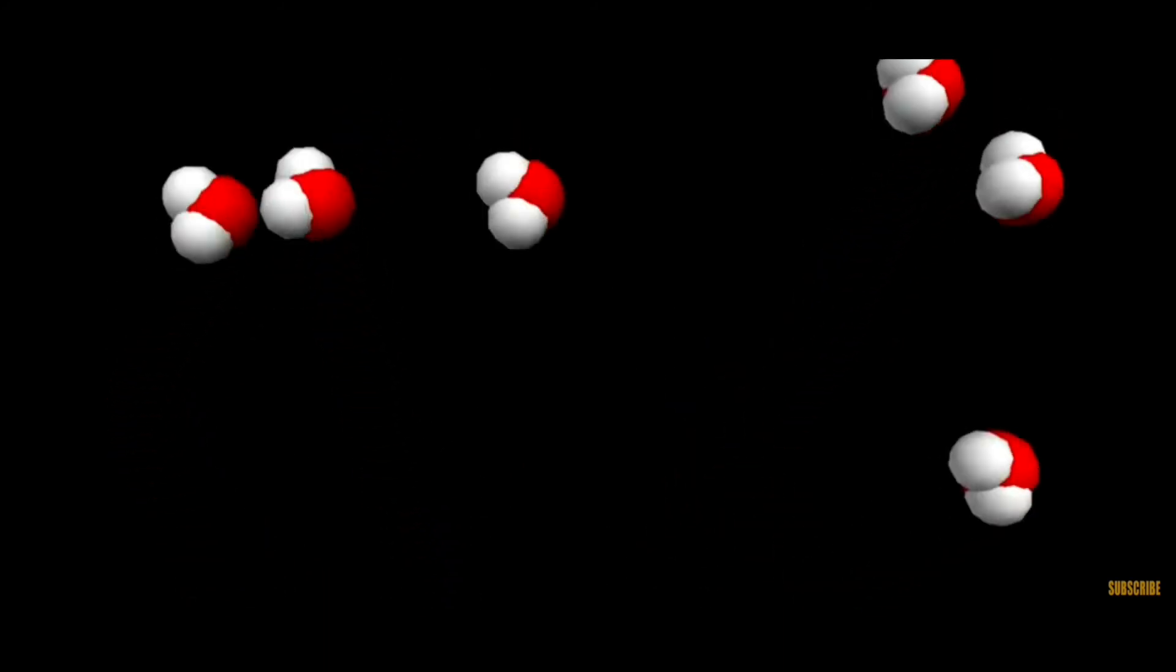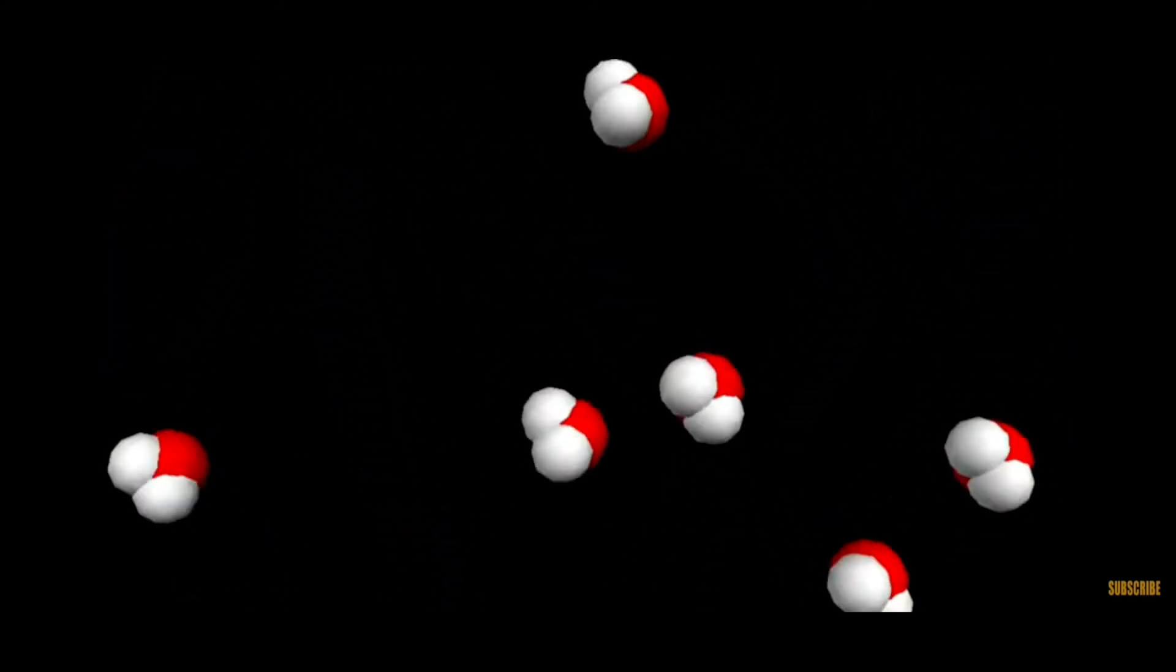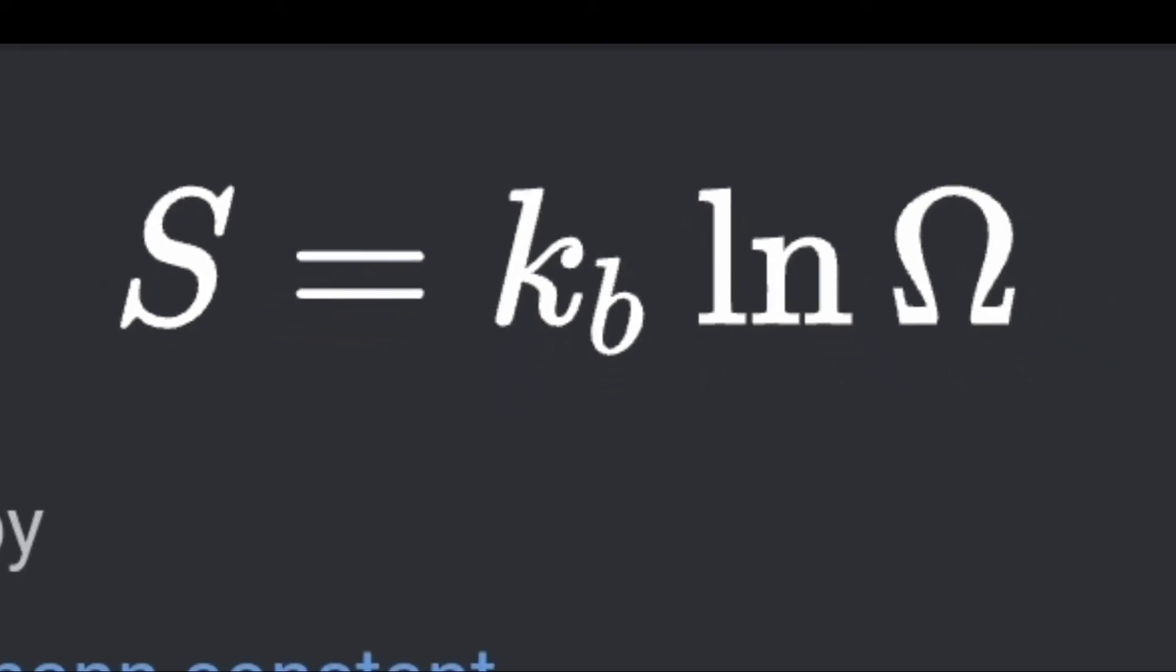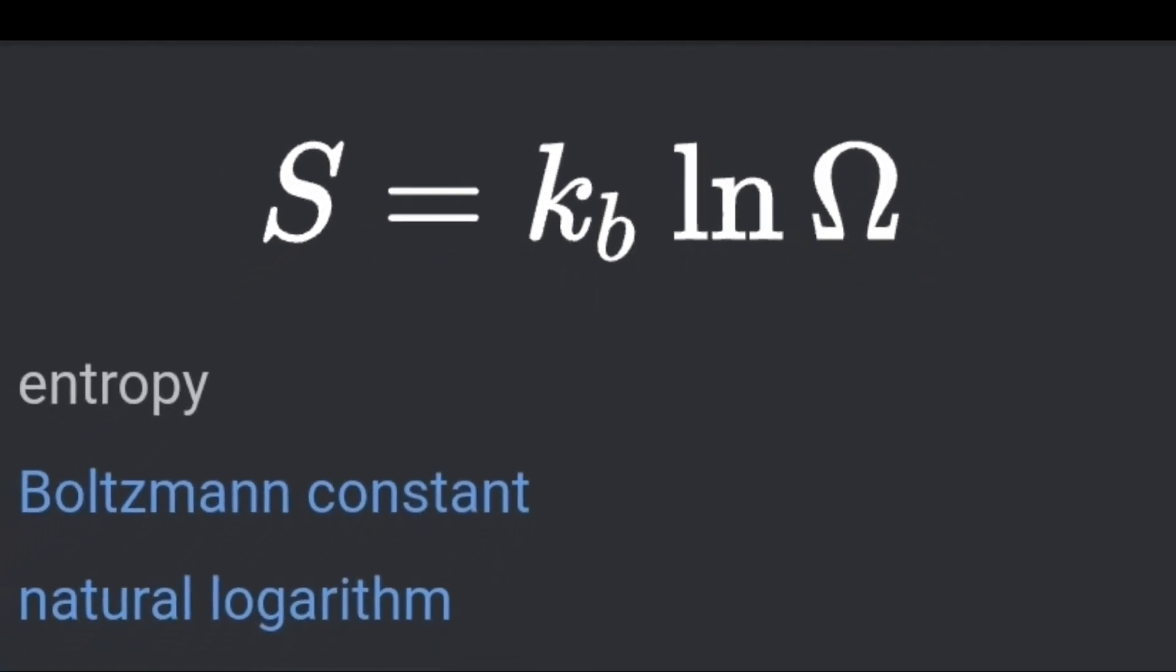And hence, the entropy of the system is a direct function of internal energy. And also, since it depends on the randomness, entropy is related to the probability of the stuff that could happen. Hence, the entropy of the system is given by this equation.